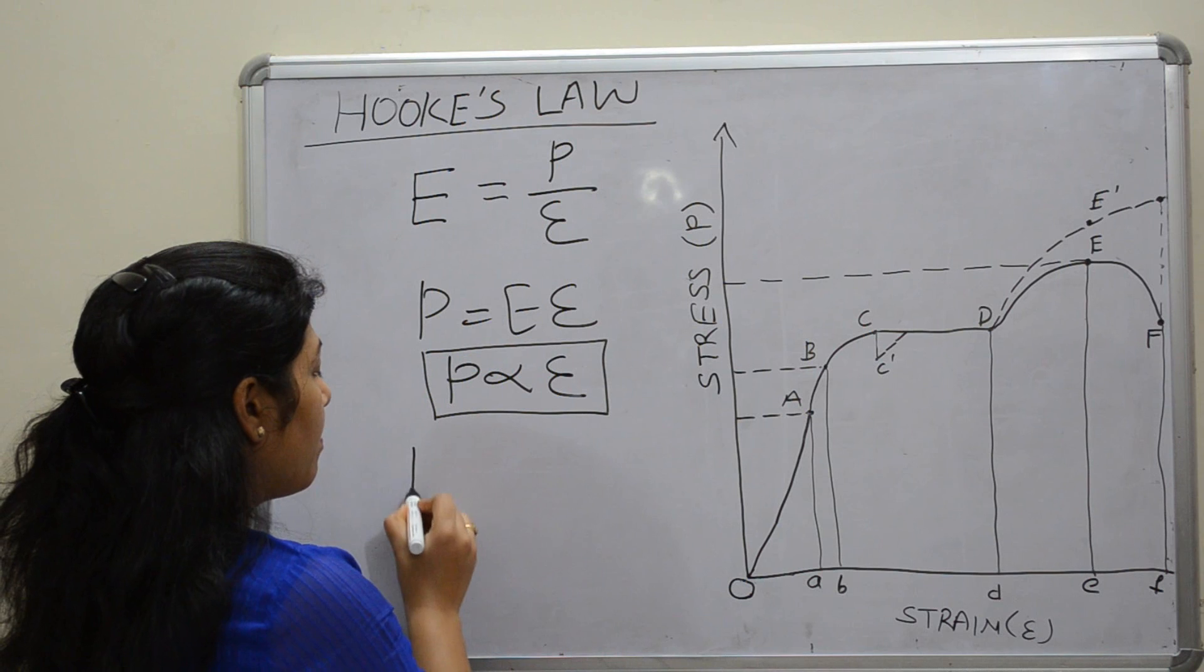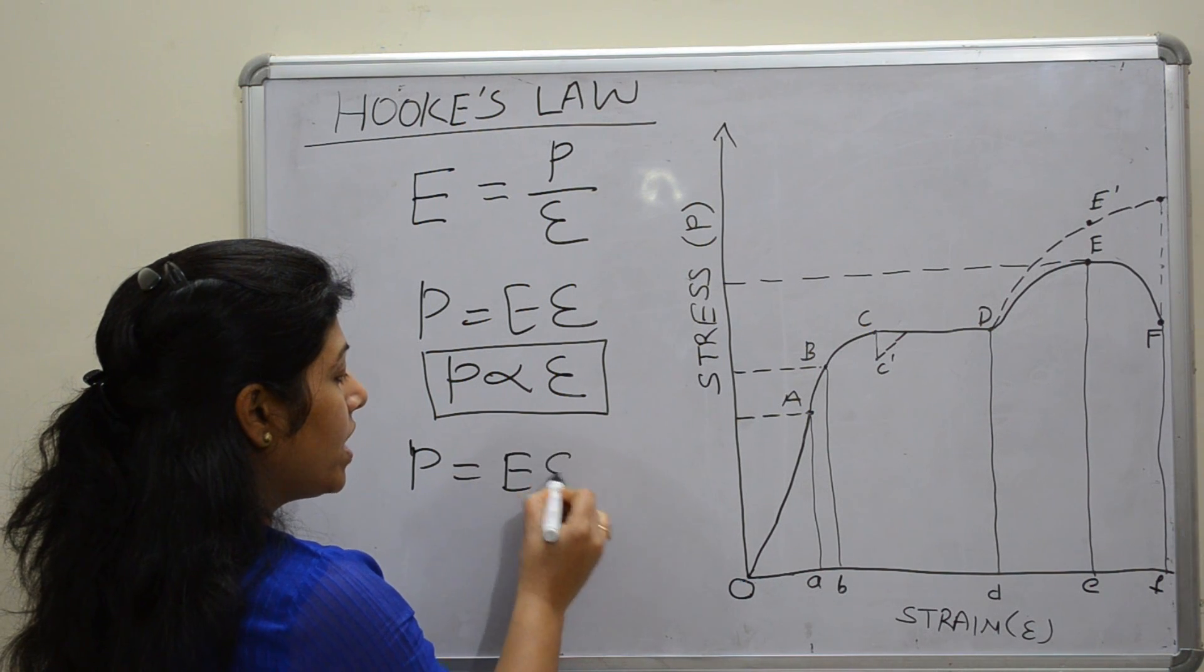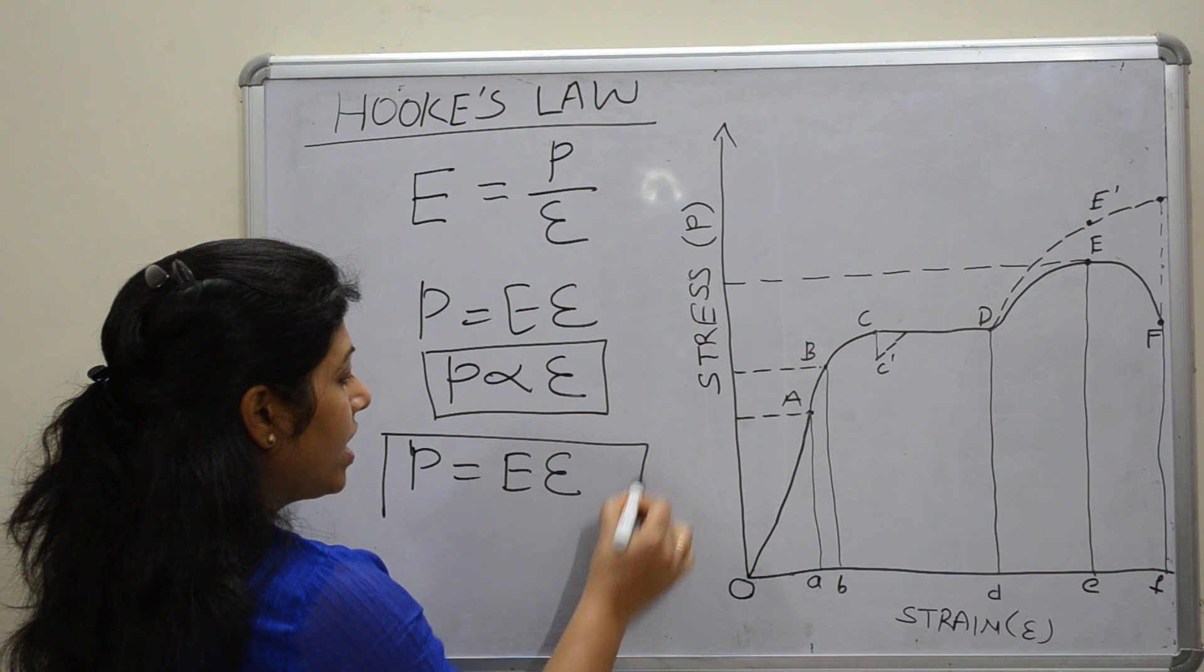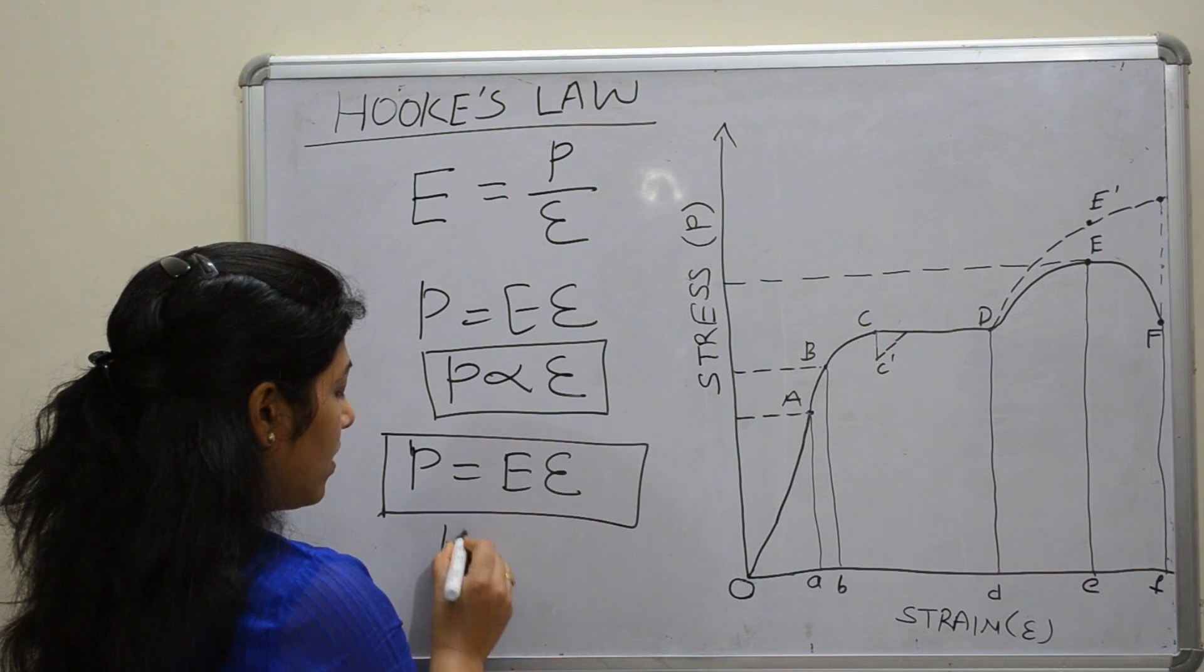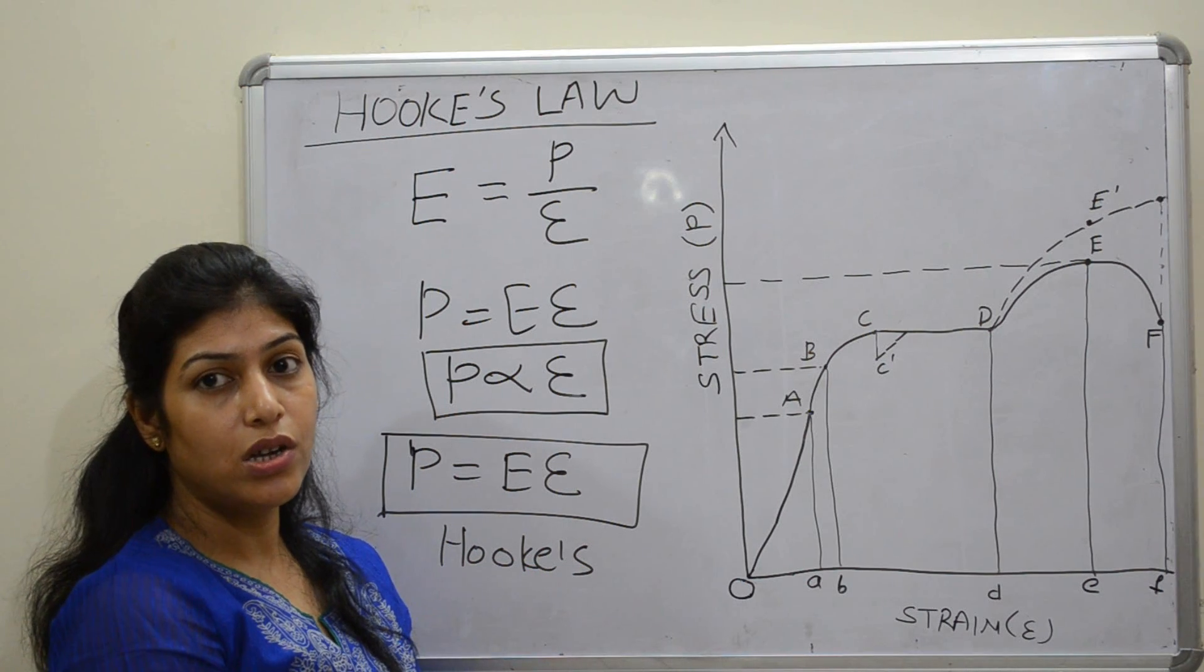The equation stress equal to E times strain is generally known as Hooke's law. This is known as Hooke's law.